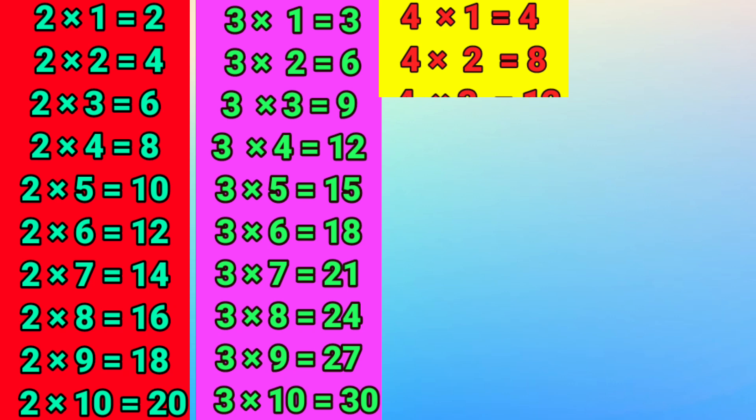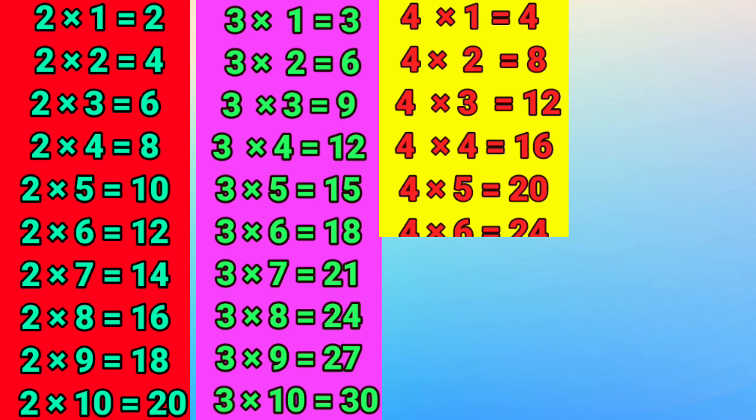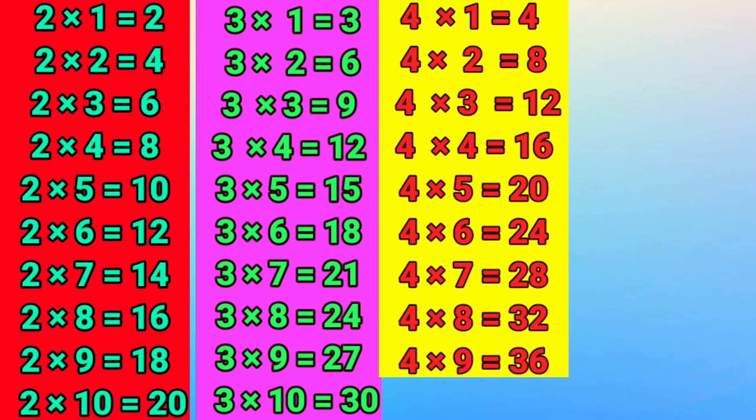4 times 1 is 4, 4 times 2 is 8, 4 times 3 is 12, 4 times 4 is 16, 4 times 5 is 20, 4 times 6 is 24, 4 times 7 is 28, 4 times 8 is 32, 4 times 9 is 36, 4 times 10 is 40.